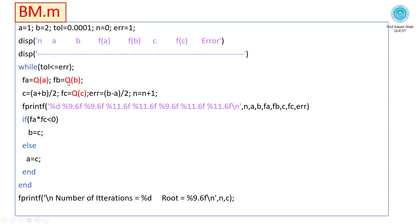fb = Q(b) calling Question here. c = (a+b)/2. fc = Q(c) calling Question here. Error = (b-a)/2.